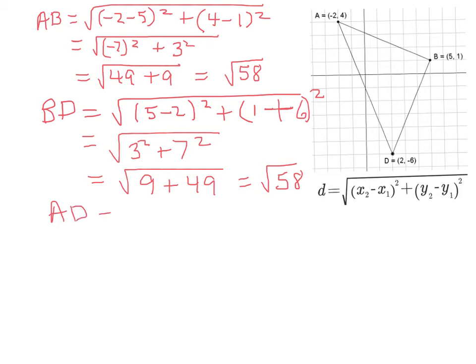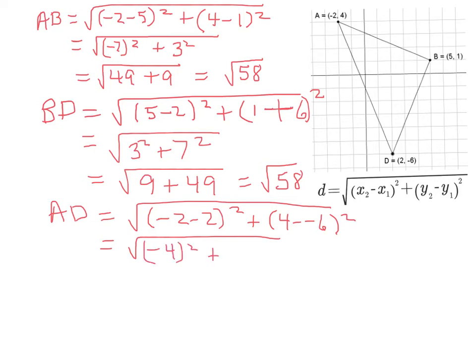Let's find the length of AD, and AD is going to be equal to the square root of negative 2 minus 2 plus 4 minus a minus 6 quantity squared. And now to simplify that, we have negative 2 minus 2 more is a negative 4 squared, plus, and then we have 4 minus a minus 6, which again changes to a plus sign, so that's 10 squared. And now that's equal to the square root of 16 plus 100 equals the square root of 116. Again, 116 is not a perfect square, so we'll leave it just like that.